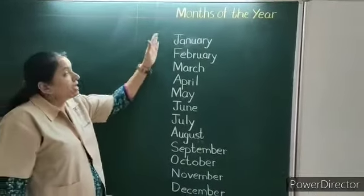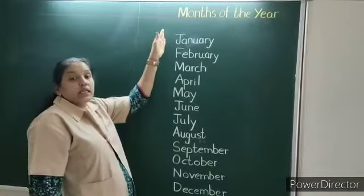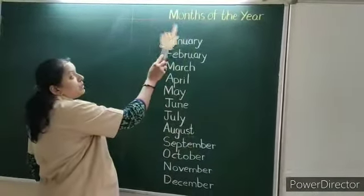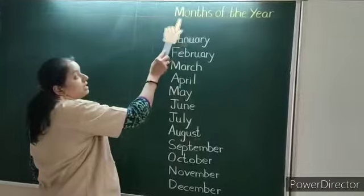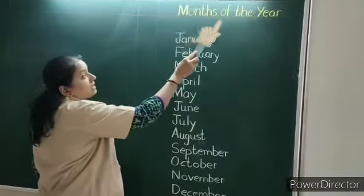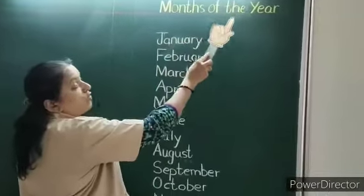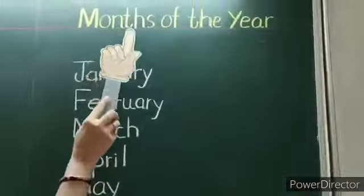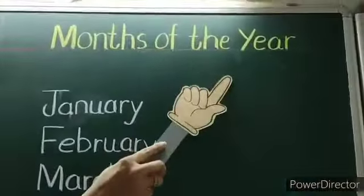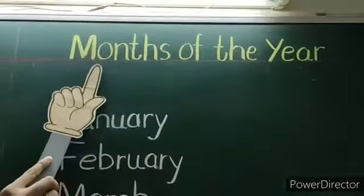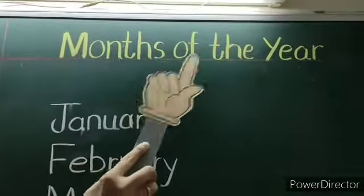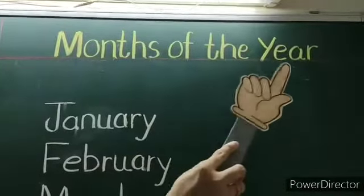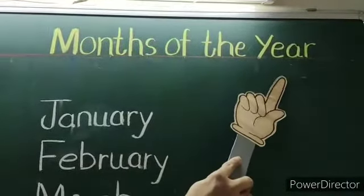Look here children. I will read it from the board. Months of the year. What is written here children? Months of the year.